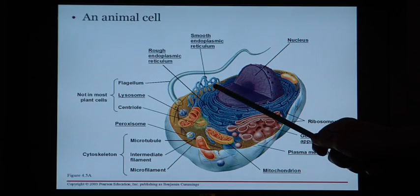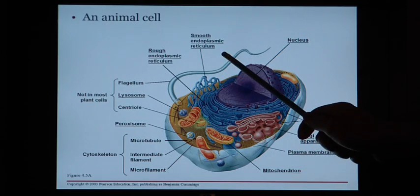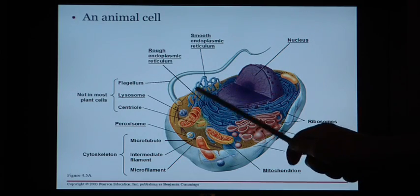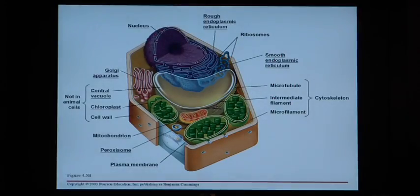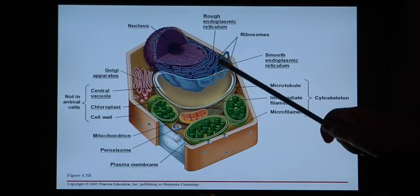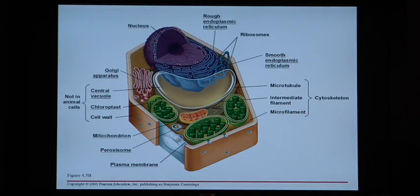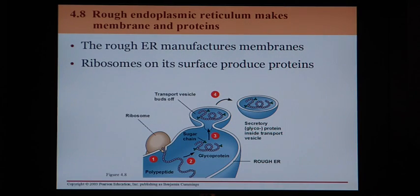The smooth ER has no ribosomes and looks very smooth. We can see both the rough ER and smooth ER in the animal and plant cell pictures. The rough ER manufactures membranes that contain proteins — let's look at how that works.